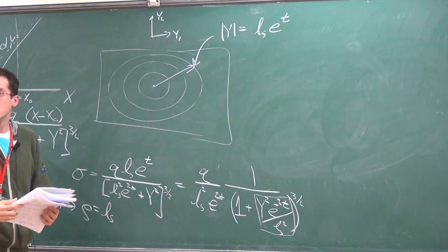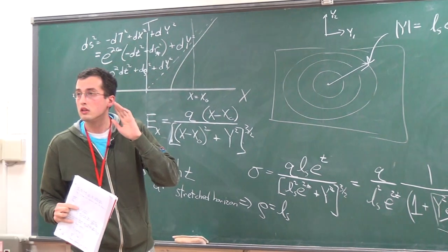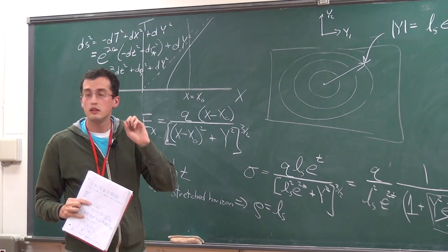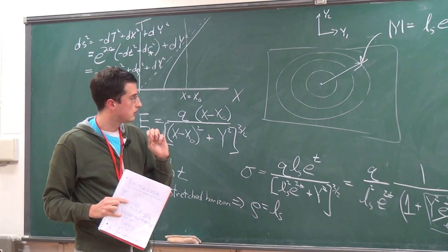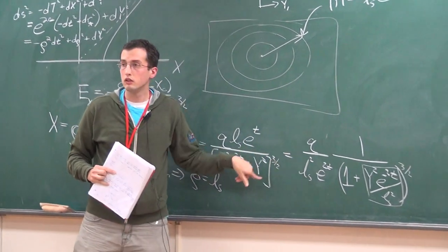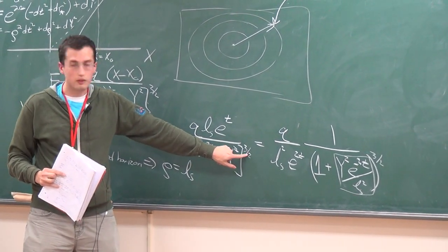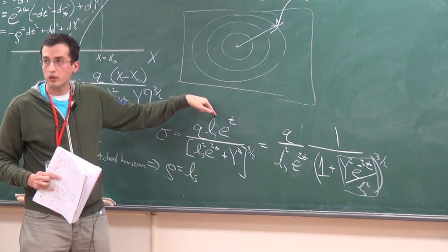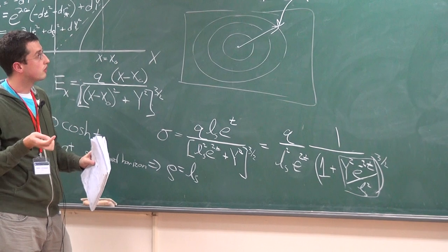A question about the algebra: extracting the denominator and canceling — I've got L-String squared e to the 2T raised to the 3-halves, so I pull it out and it has three powers in the denominator, I cancel one of them up here, so there are two left. I hope I didn't make any algebra mistakes.